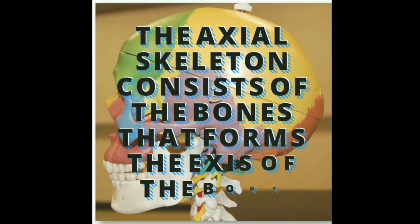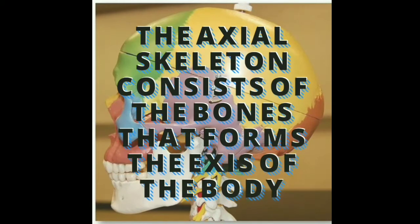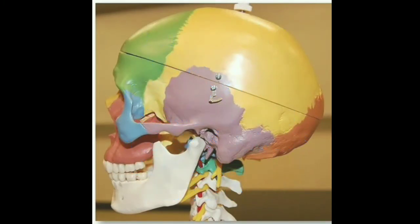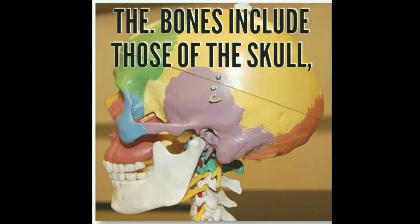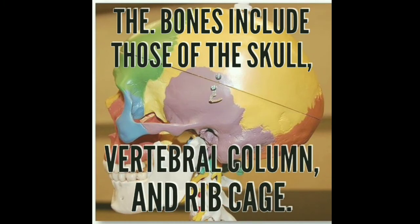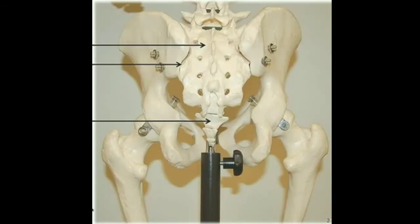The axial skeleton consists of the bones that form the axis of the body. These bones include those of the skull, vertebral column, and ribcage.